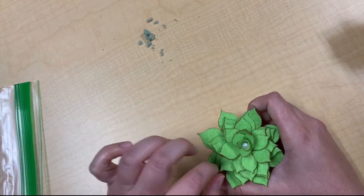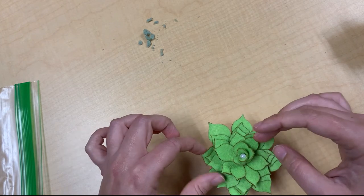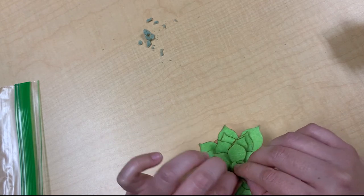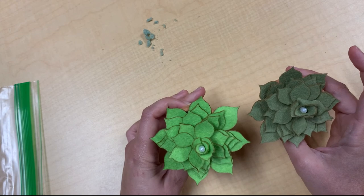If you do have a hot glue gun at home, you could also do this same project with a hot glue gun. But in order to make this work for everyone, even people without a hot glue gun, we did it with a corsage pin. And now your little succulent plant is done.